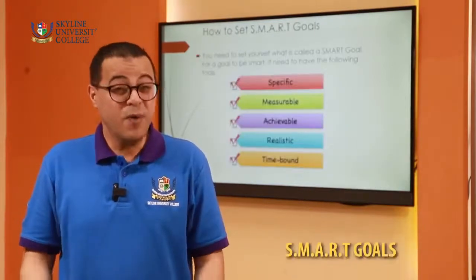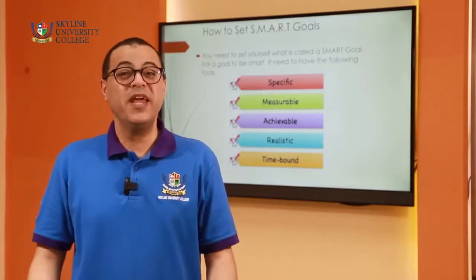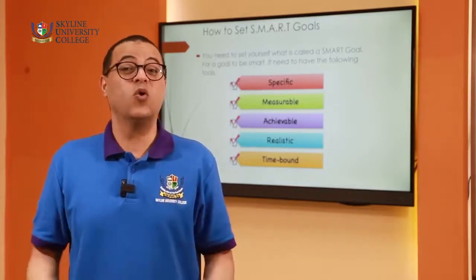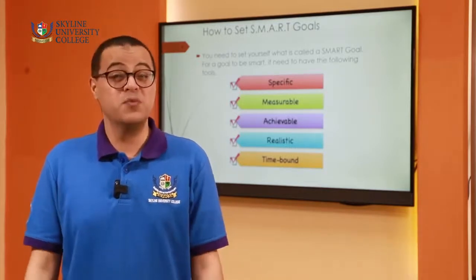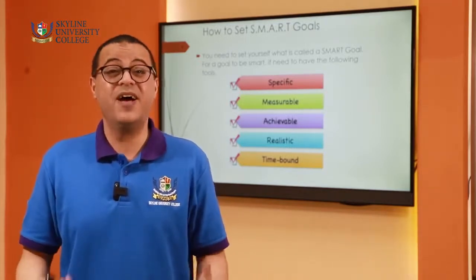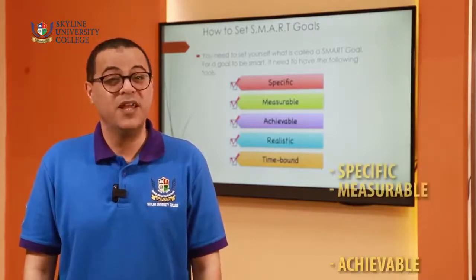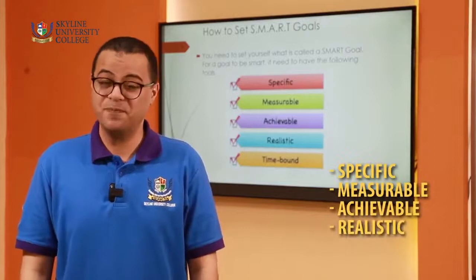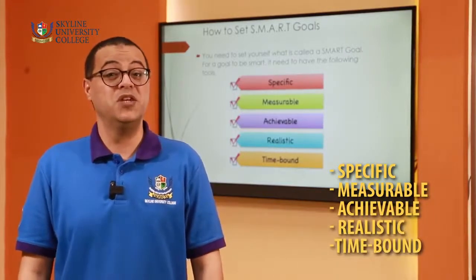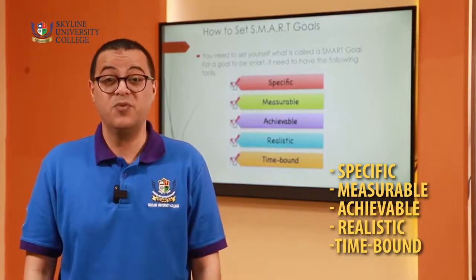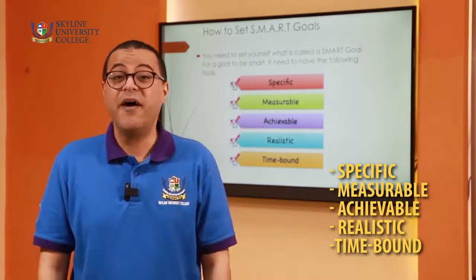Speaking of which — smart goals. You need to set yourself what is called a smart goal. For a goal to be smart, it needs to have the following: number one, it needs to be specific; two, measurable; three, achievable; four, realistic; and number five, time bound.